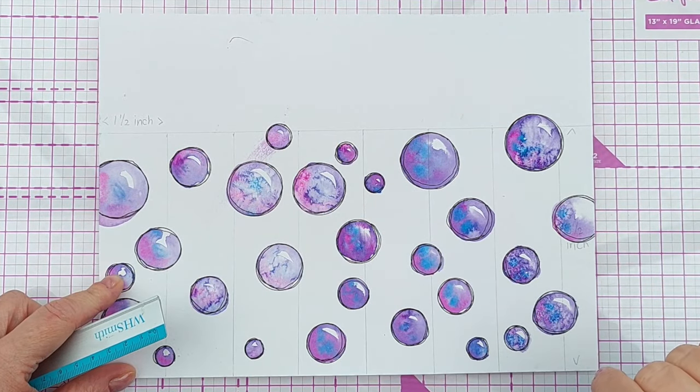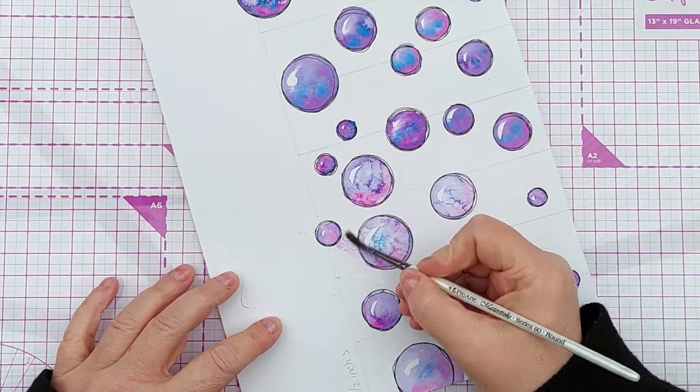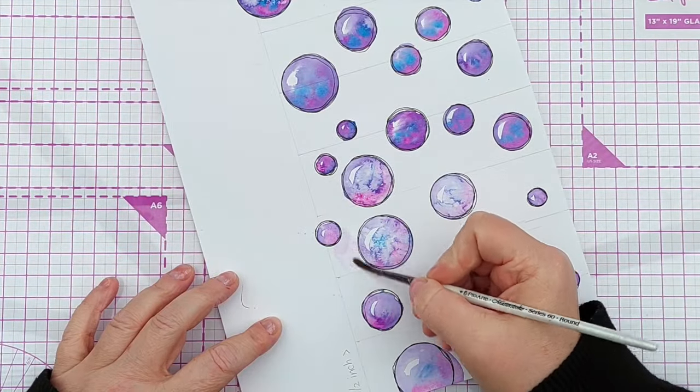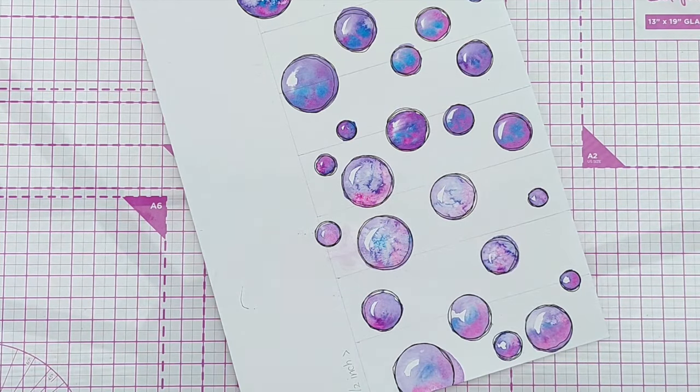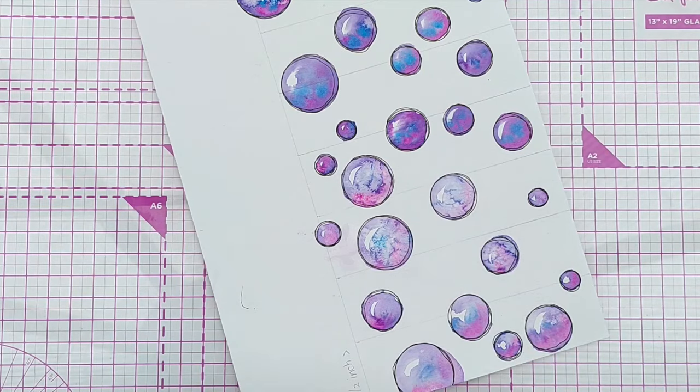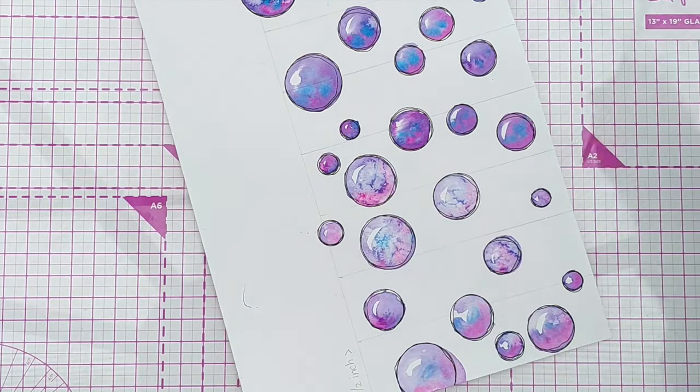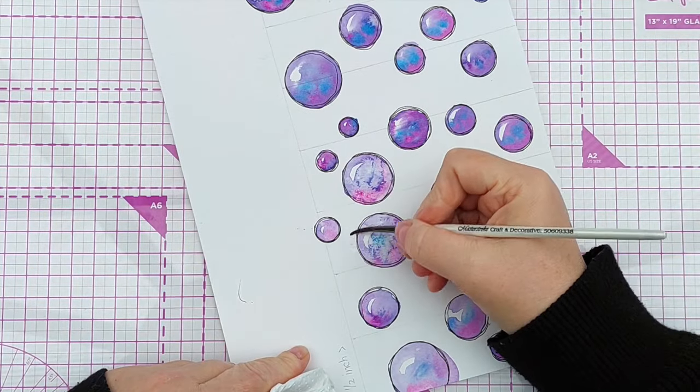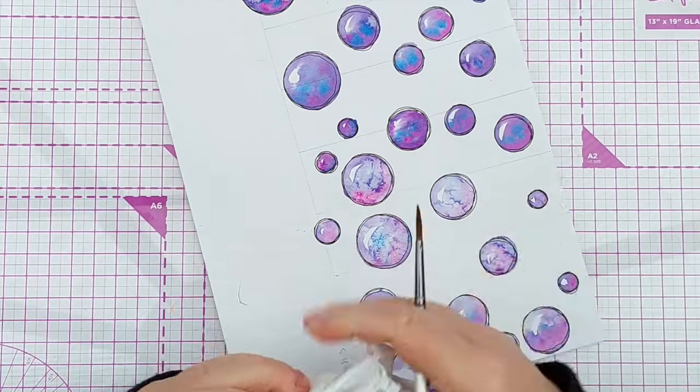Never mind, we'll deal with that later. I might be able to, actually if I get some clean water and do that, I might be able to lift off that color. Disaster averted. Some watercolor colors are quite staining and will stain the paper the moment they touch it, but some colors aren't staining so they lift off really easily. So there we go.